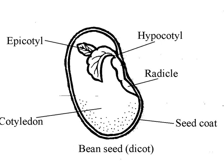Now let's move further. The seed coat protects the seeds. The embryo consists of a young shoot and root — root is always inside the soil and shoot grows up. The food store provides food for the young plant, and the food store is the cotyledon. It remains there until the plant is able to grow its own green leaves.